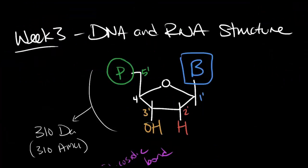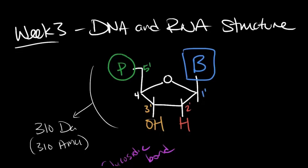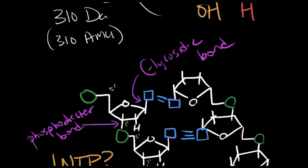Now let's talk about some of the bonds that hold DNA and RNA together. But first, a quick fact: one nucleotide is about 310 Daltons in mass. Remember how the 1' carbon has a base attached to it? That bond is called the glycosidic bond. This bond is sometimes cut spontaneously by hydrolysis, which means cutting by water. You'll also remember that the 3' carbon is where the next nucleotide is added. When it is added, the bond that is formed is a phosphodiester bond.